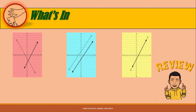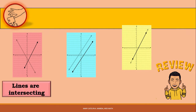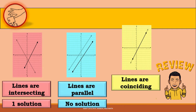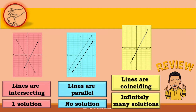Remember that the characteristics of the graphs of the system of linear equations can be used to determine the number of solutions a system has. If the graph of the systems of linear equations is intersecting, there is only one solution, which is the point of intersection of the two lines. If the graph is parallel, there is no solution because they do not have a point of intersection. And lastly, if the graph is coinciding, there are infinitely many solutions — all the points in the lines are solutions to the system.